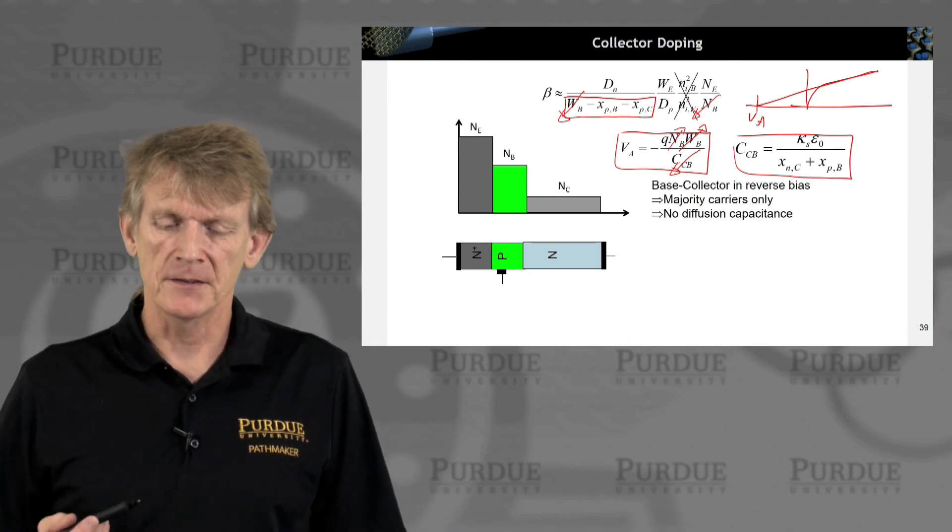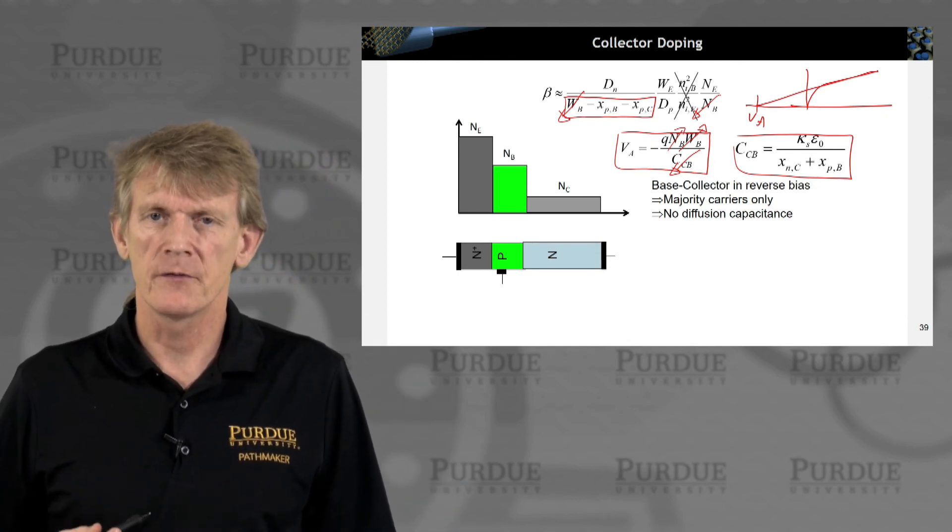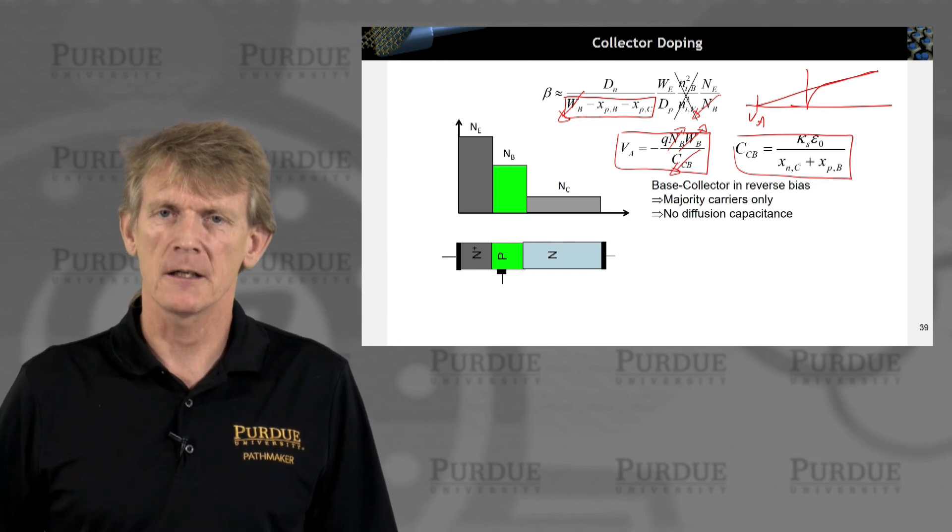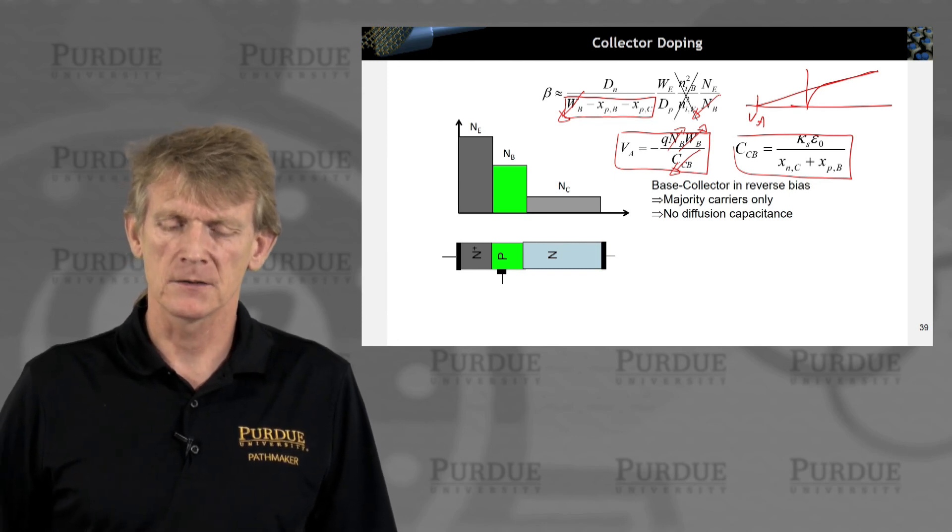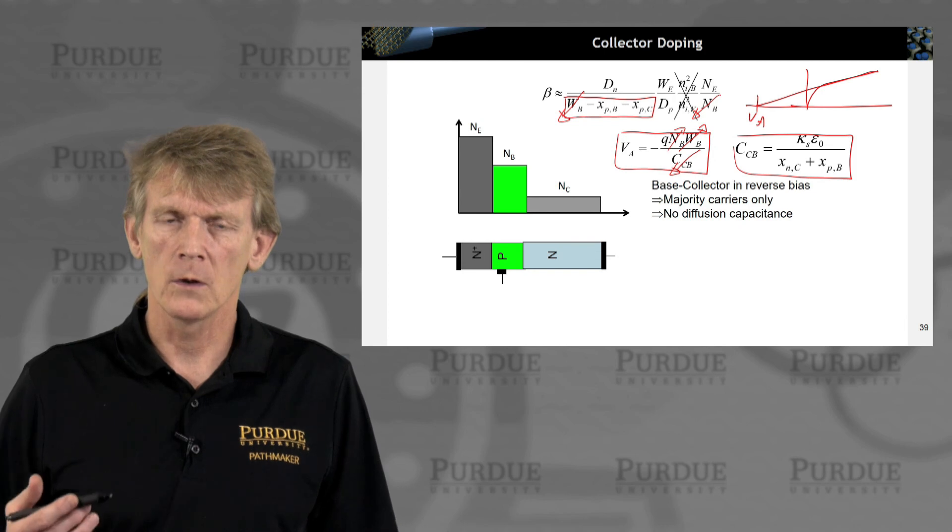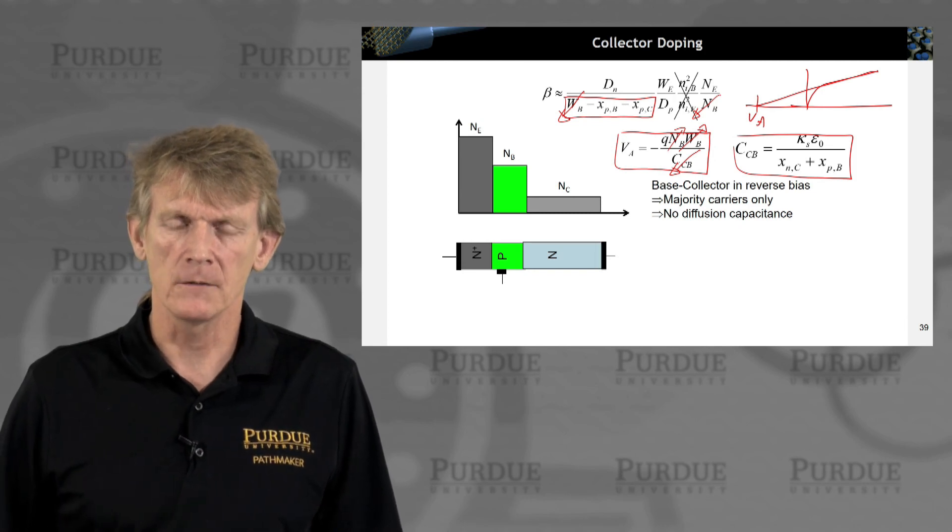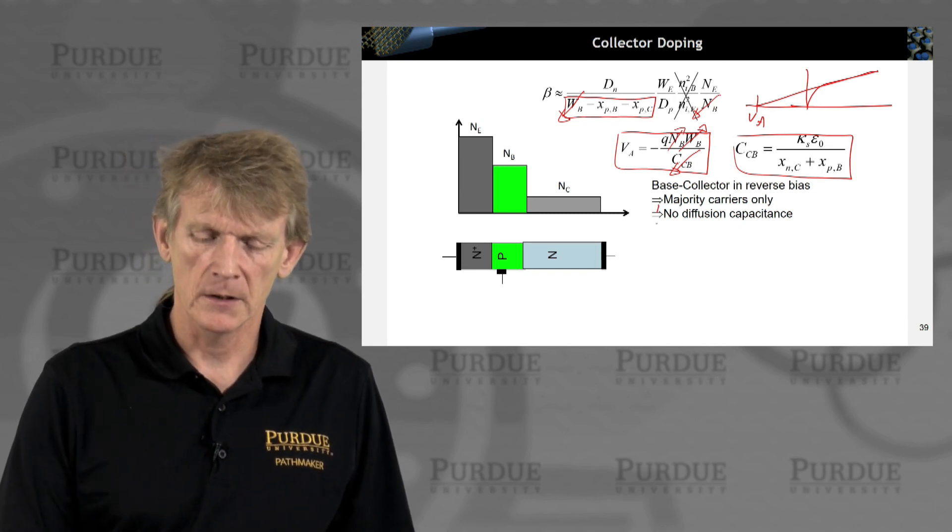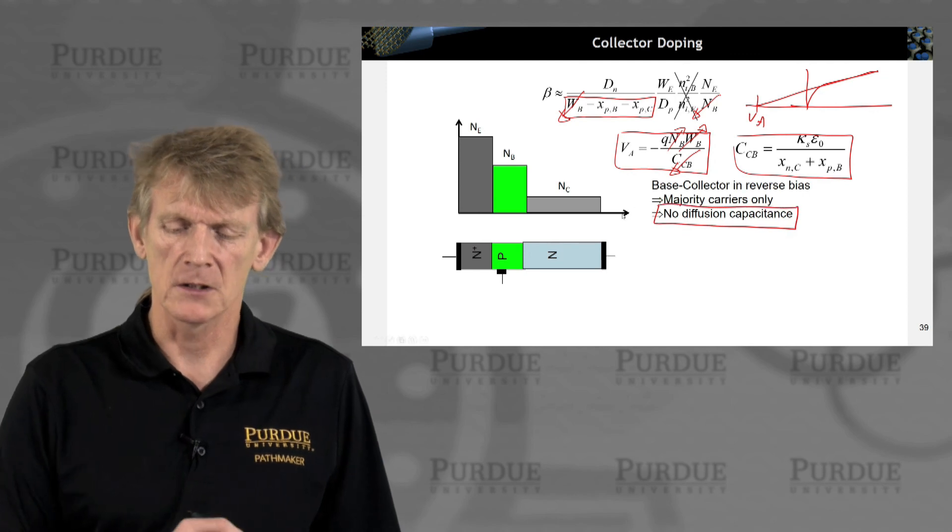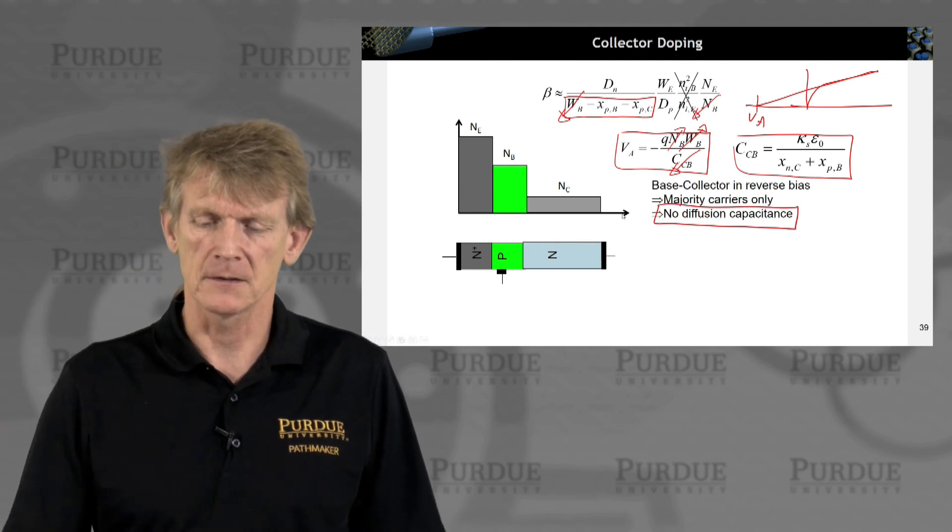So on the base collector side, we are in reverse bias. So there's only majority carriers, and we assume that there's no minority carrier influence at all. And that means we don't have any diffusion capacitance. So we're just dealing with the junction capacitance.